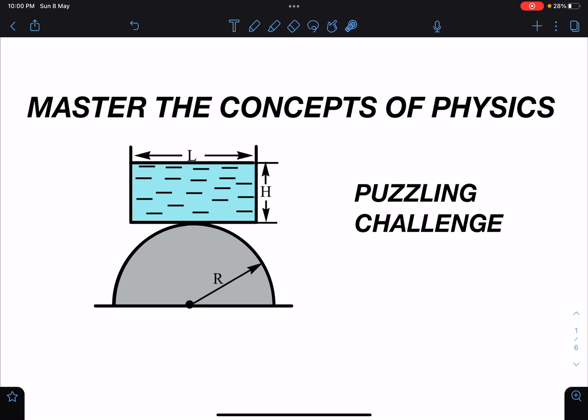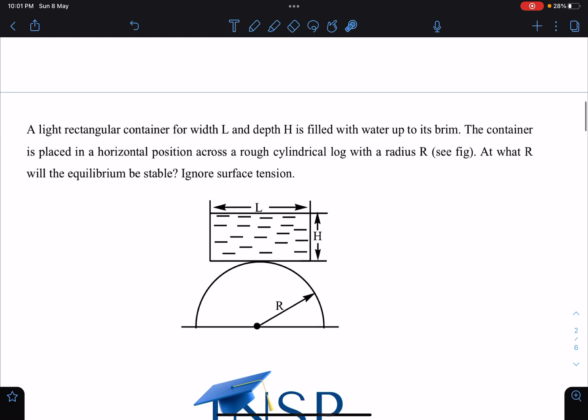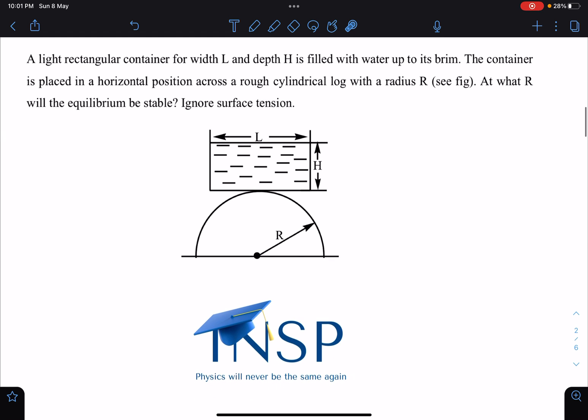So I thought I'll be discussing this problem on YouTube. Here is the problem statement: A light container of width L and depth H is filled with water up to its brim. The container is placed in a horizontal position across a rough cylindrical log with a radius of R.